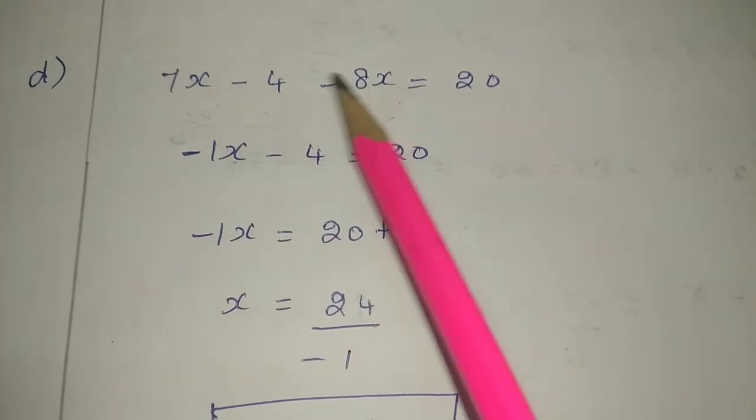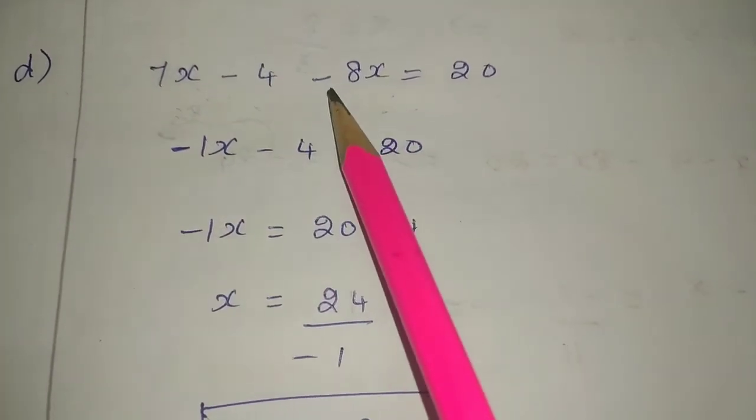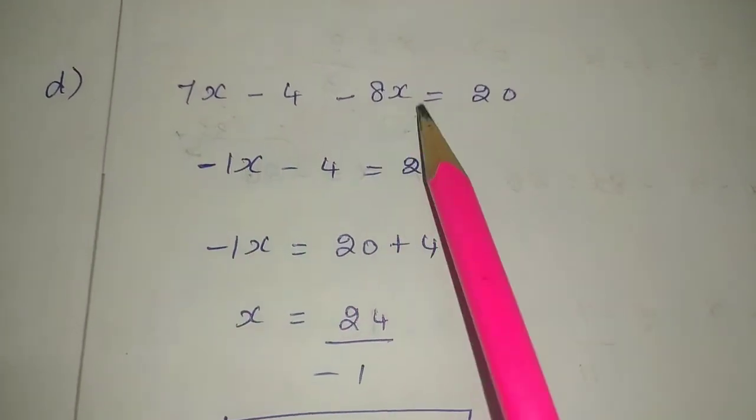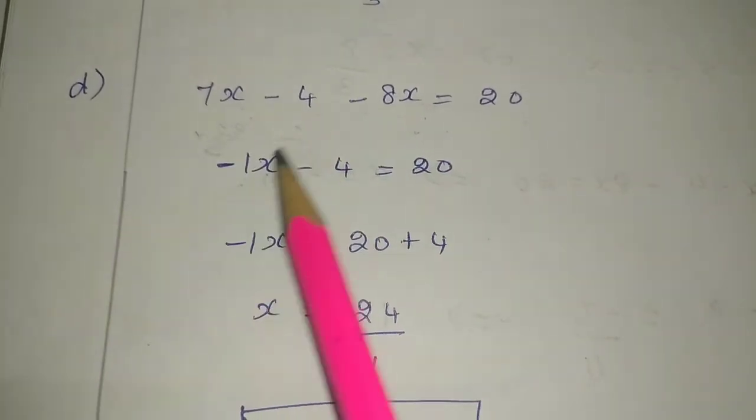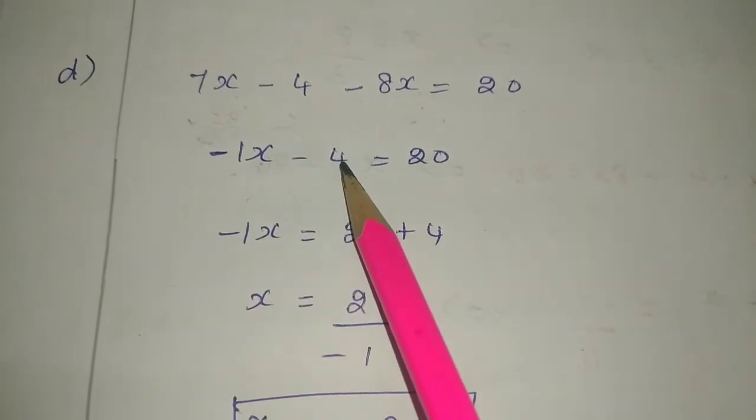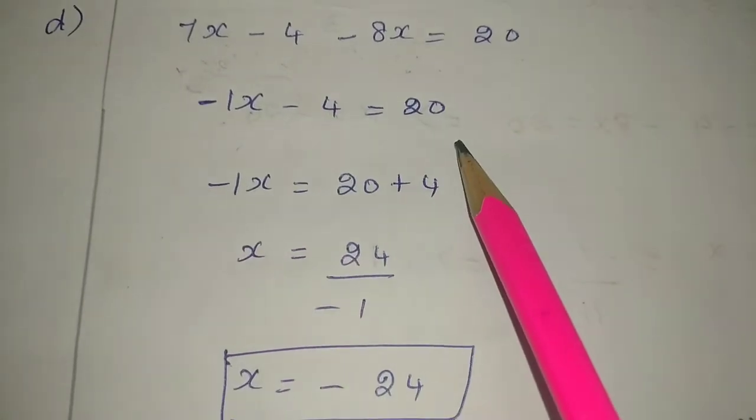7 minus 8 is minus 1x, and minus 4 constant term equals 20. Now it's a normal equation.